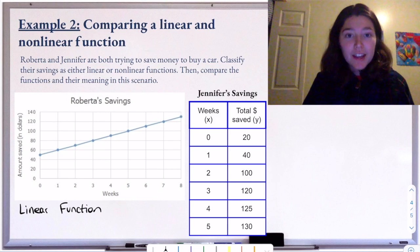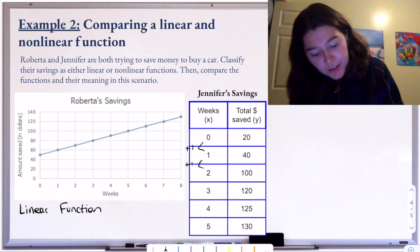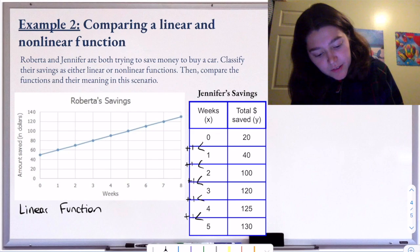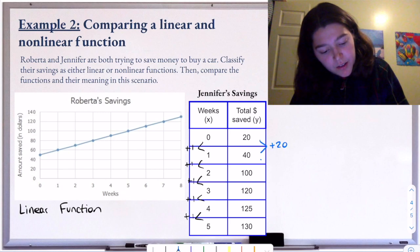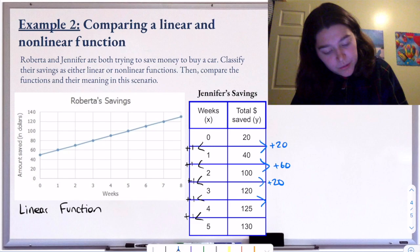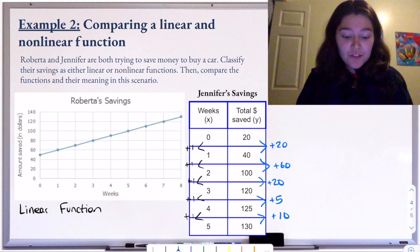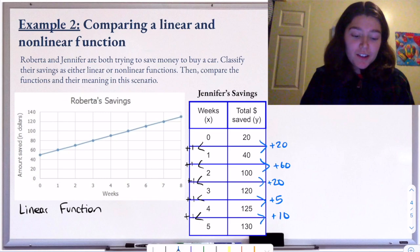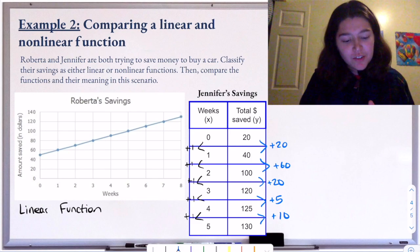Jennifer's data is in table form. When we see a table, to determine linear or nonlinear we need to check for a constant rate of change. The change in x is simply going up by one week each time. For the change in y: 20 to 40 is plus 20, 40 to 100 is plus 60, 100 to 120 is plus 20, 120 to 125 is plus 5. Since there is not a constant rate of change, Jennifer's function is nonlinear. So Roberta's function is linear and Jennifer's is nonlinear.